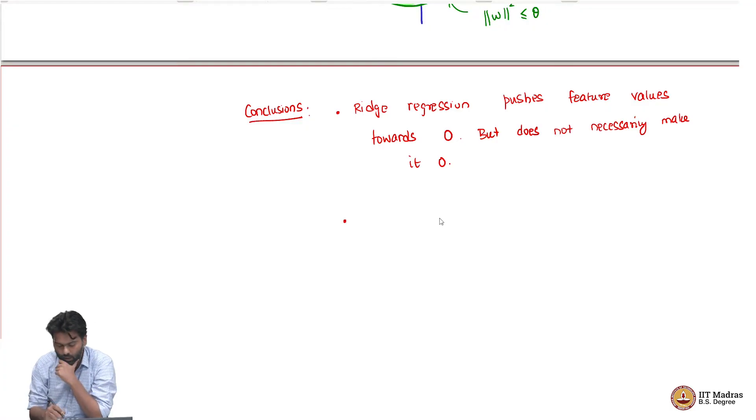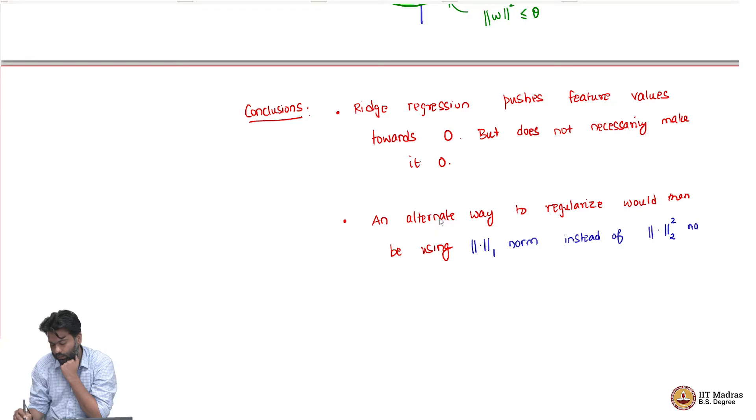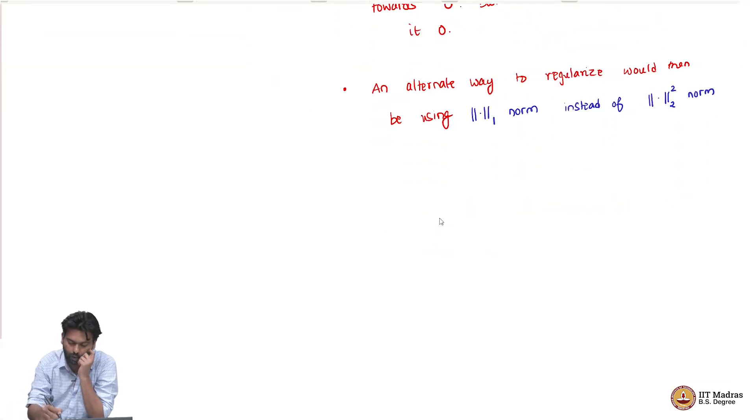Sparse means a lot of zeros. An alternate way to regularize would be using, as we will see why this is a better way, using l1 norm instead of l2 norm or l2 square term. What does that mean? What is an l1 norm? Well, l1 norm of a vector w is defined as sum over i equals 1 to d, the absolute value of each of its components. You are just summing up the absolute values.